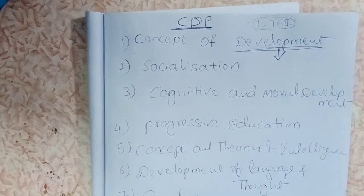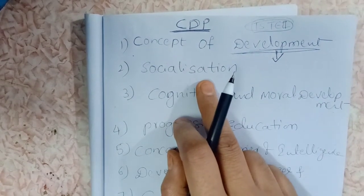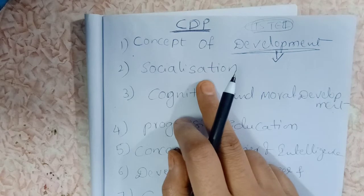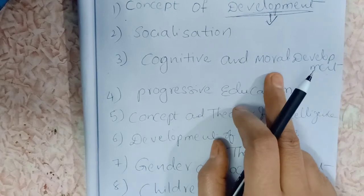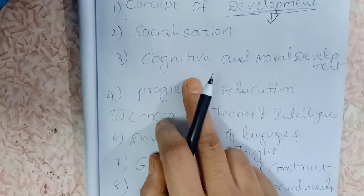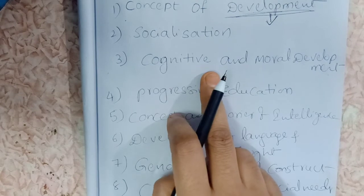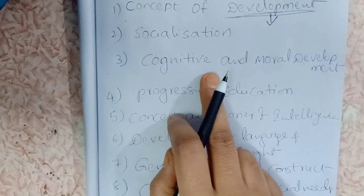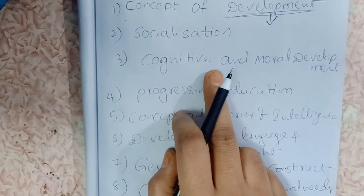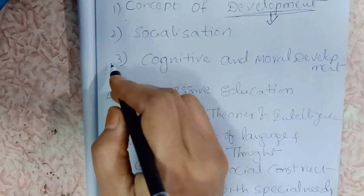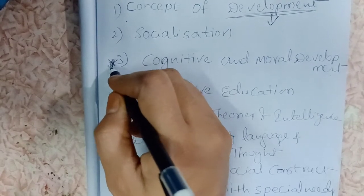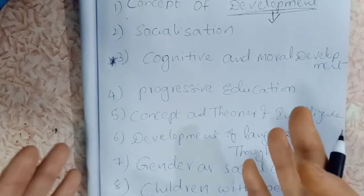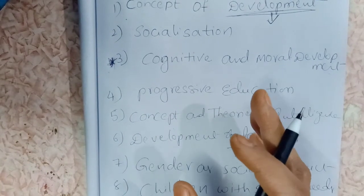If you understand the subject, it becomes very easy. Next, under cognitive and moral development, we have Piaget's theory of cognitive development, Vygotsky's theory, and Kohlberg's theory of moral development. These are very important topics and we shall definitely get practice bits under them.